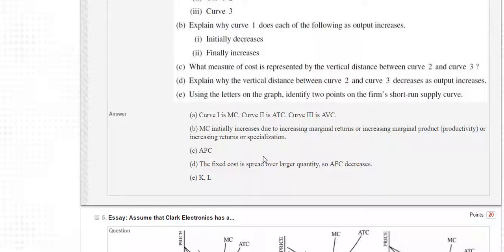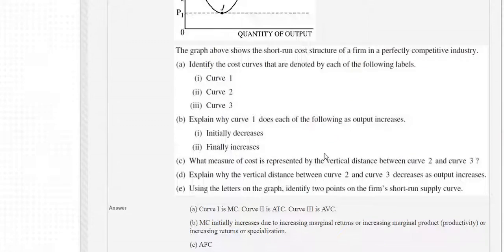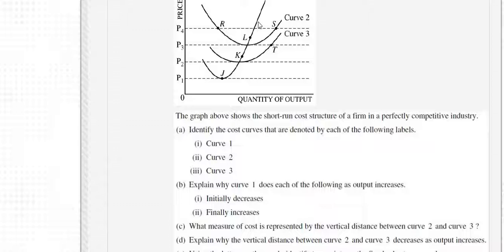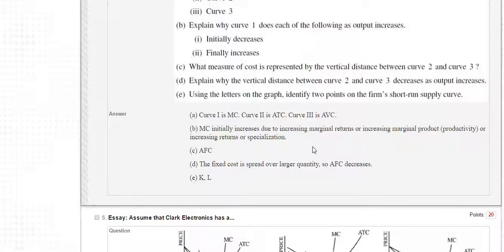The marginal cost curve initially goes down or decreases because of increasing marginal returns, or increasing marginal product. And then the marginal cost curve is going to increase because of eventual decreasing marginal returns or decreasing marginal product.